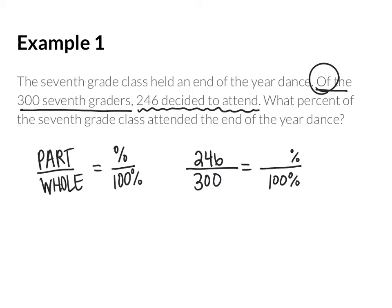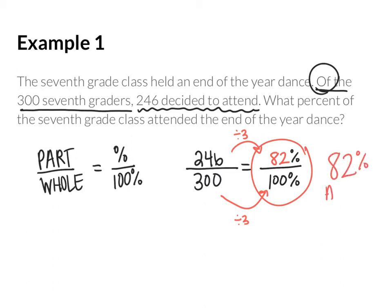When we're making equivalent fractions, we can see that I divide 300 by 3 to get to 100, which means I would divide my numerator by 3 for that equivalent fraction. Since we got our ratio to be out of 100, we get 82% attended as our final answer.